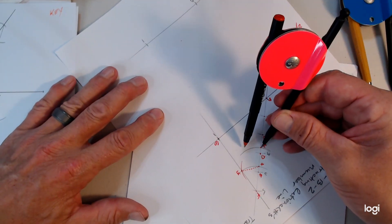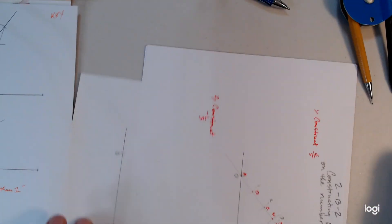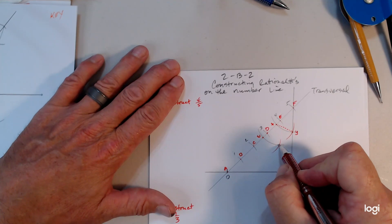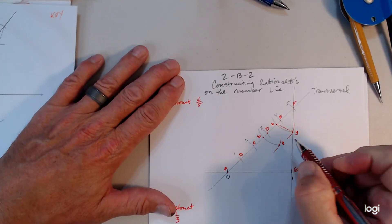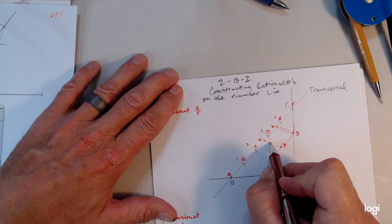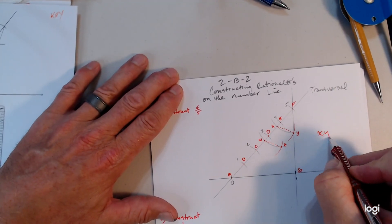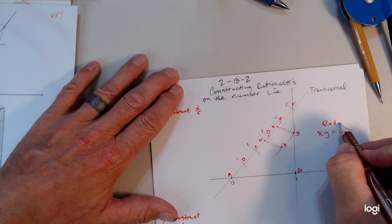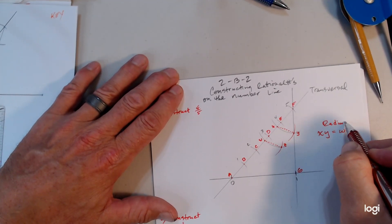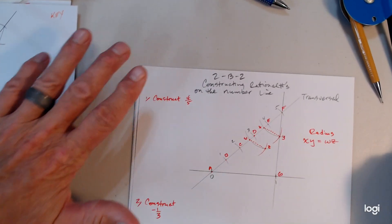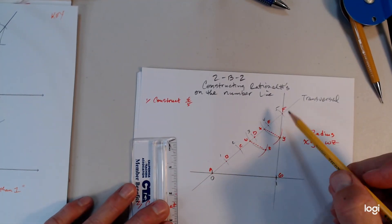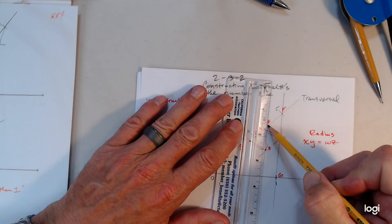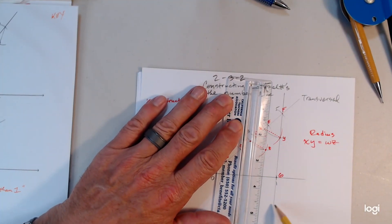Then bring it down to W and repeat it. There we go — I just found point Z right here. Call that point Z. WZ is the same as XY — I'm talking about the radius of the compass. That is very important. Last step: we want four-fifths, so we're going to use point E now because that's on the fourth segment. I'll line it up with Z, and look — it should be parallel to FG.